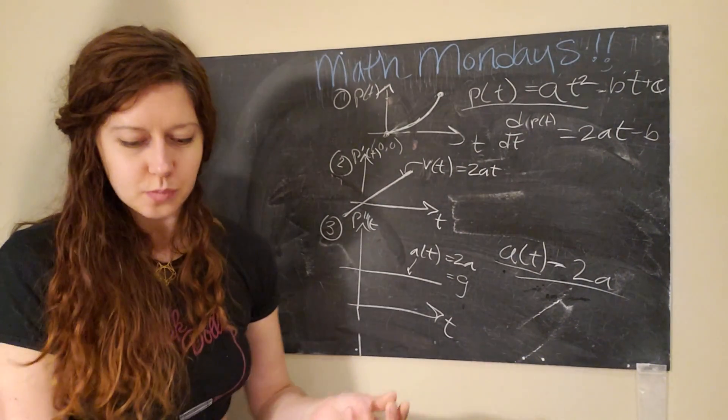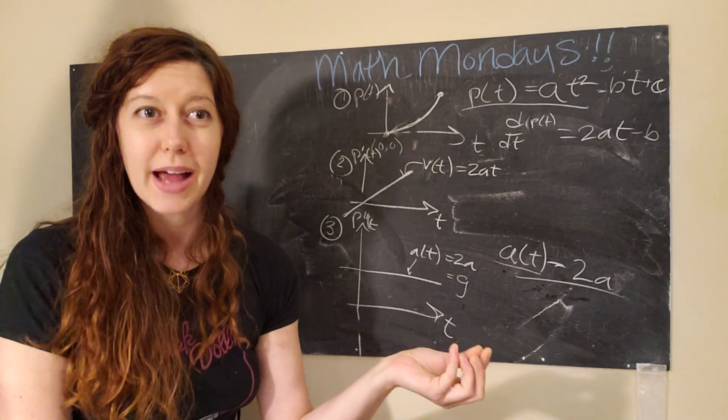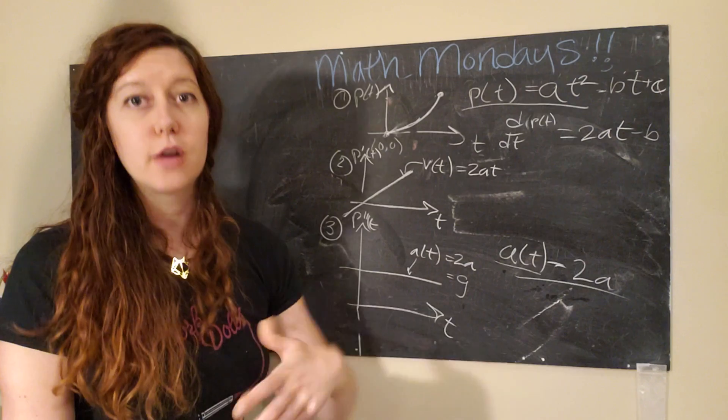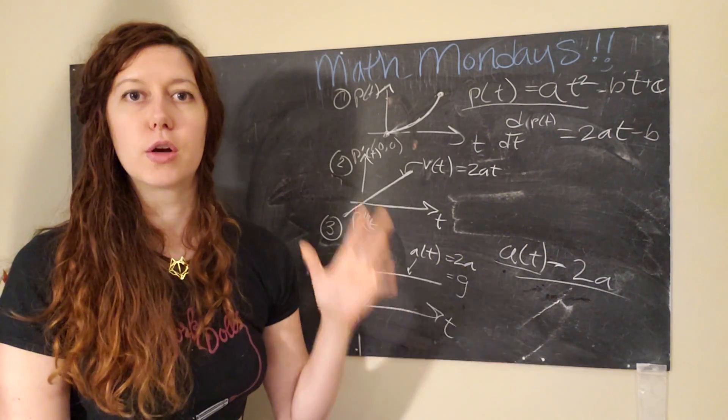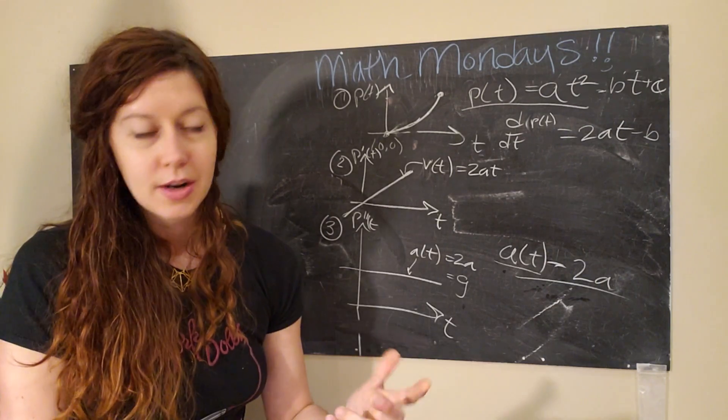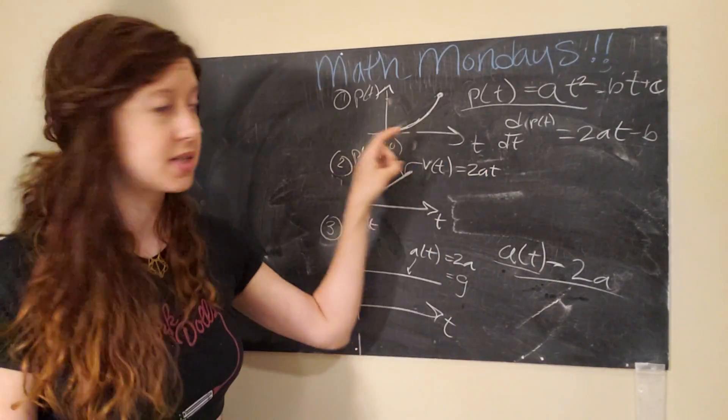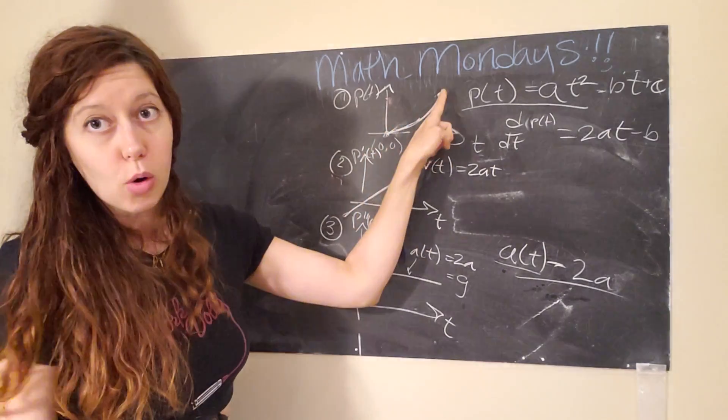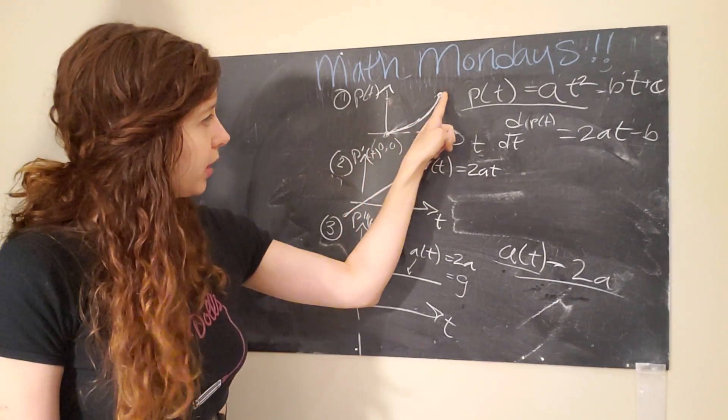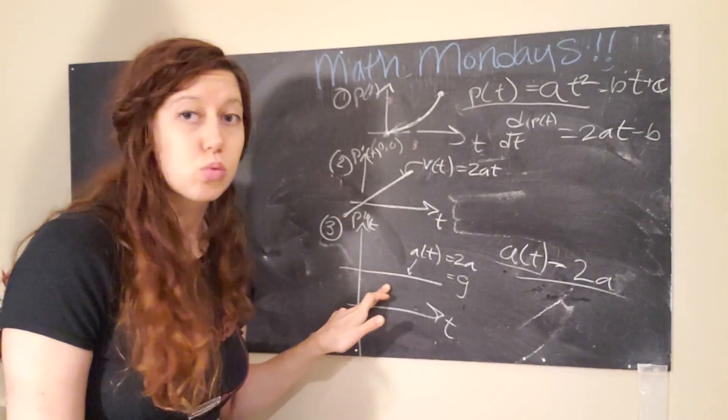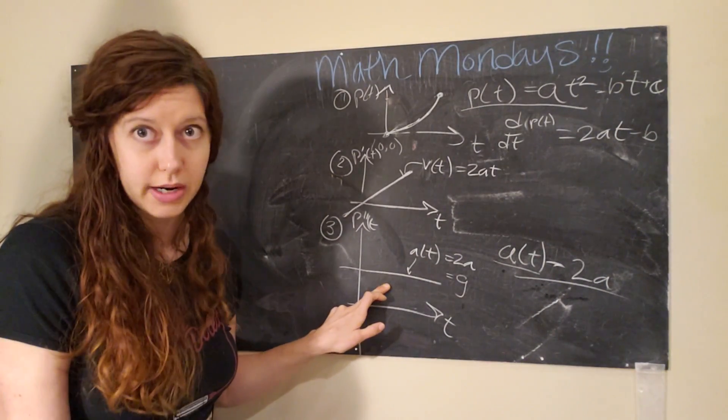Basically what the Pacific Northwest National Lab, or PNNL for short, found is that the rate of change of global temperature is increasing. So it actually has the same form as this. So global average temperature is going up like this, but it's not going up at a constant rate. The rate is accelerating.